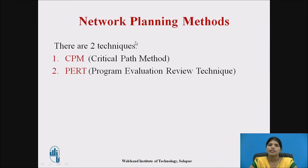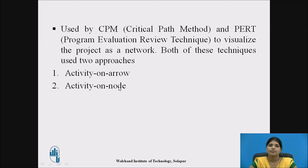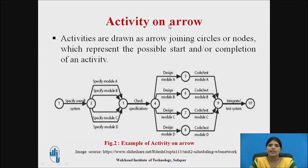There are two techniques for network planning methods: the first is CPM and the second is PERT. Both CPM and PERT visualize the project as a network and use two approaches. The first is activity on arrow and the second is activity on node. In activity on arrow, the activities are drawn as arrows joining circles or nodes, which represent the possible start and/or completion of an activity.